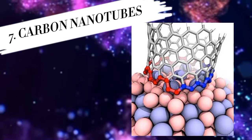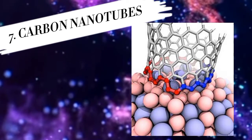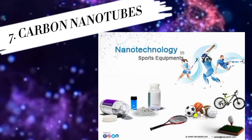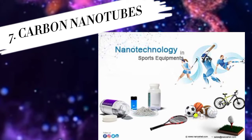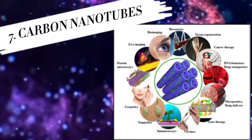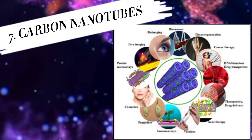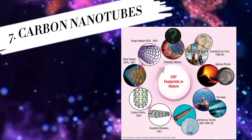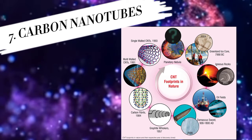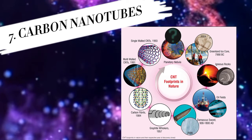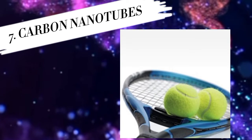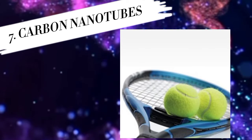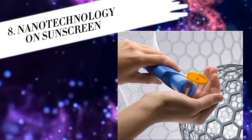Number 7: carbon nanotubes have a variety of commercial uses, including making sports equipment stronger and lighter. For example, a tennis racket made with carbon nanotubes bends less during impact and increases the force and accuracy of delivery. Nanoparticle-treated tennis balls can keep bouncing twice as long as standard tennis balls.